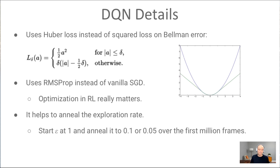This is the DQN algorithm. One more detail: they use a Huber loss instead of squared loss. A squared loss grows like a parabola when away from zero; a Huber loss is parabolic near the center but becomes linear beyond a threshold. This means any single target can only contribute so much to the weight updates, giving more averaging and preventing outliers from dominating. There's also annealing of the exploration rate — epsilon starts high and decreases — and RMSprop is used instead of standard gradient updates, which is found to work better.